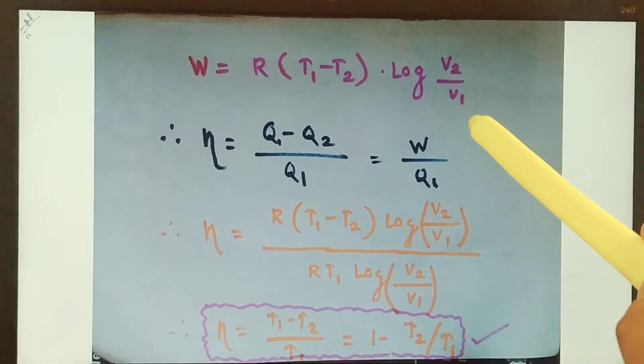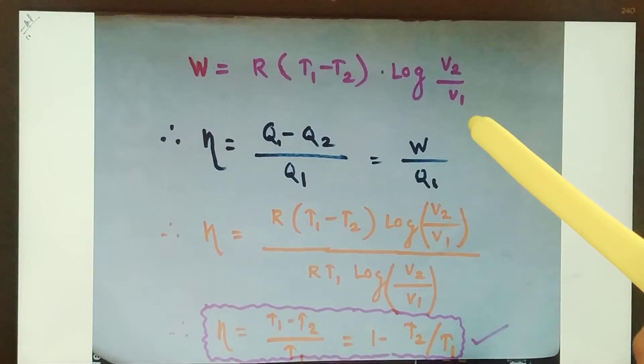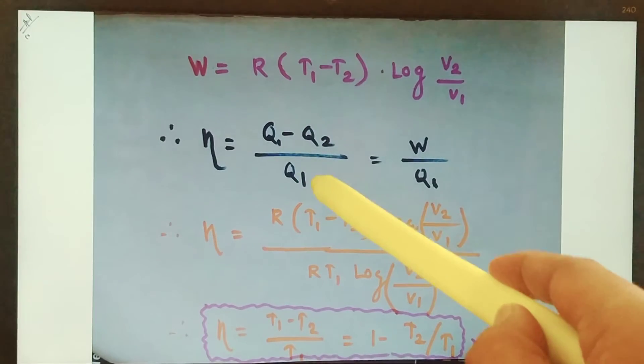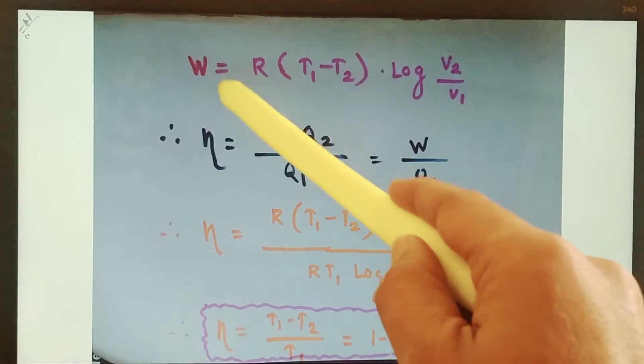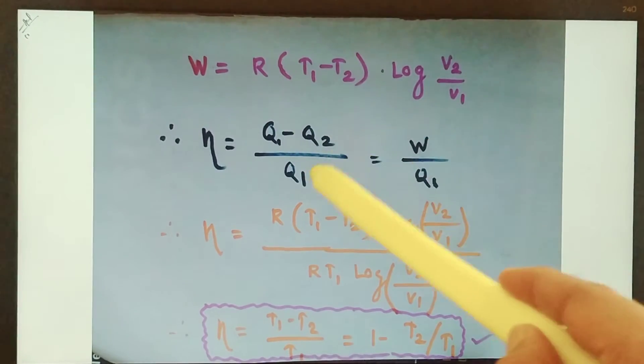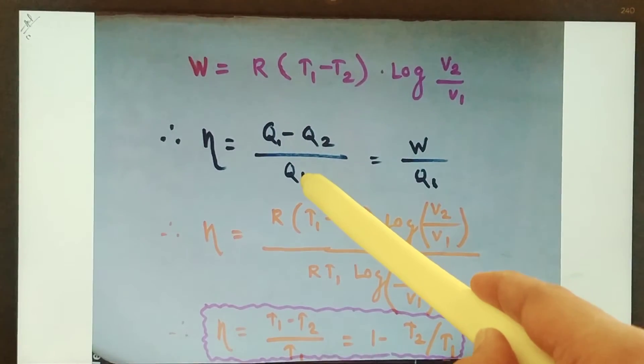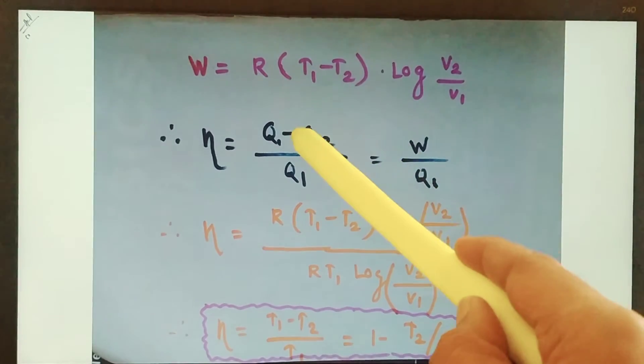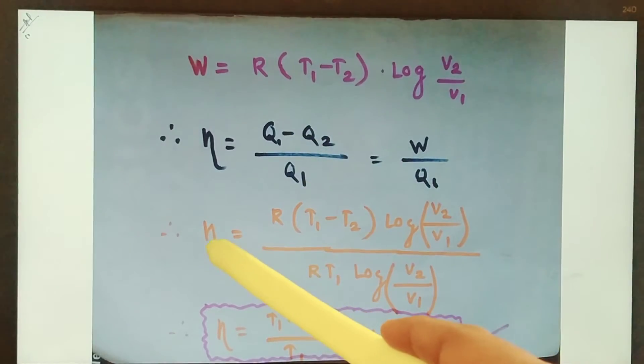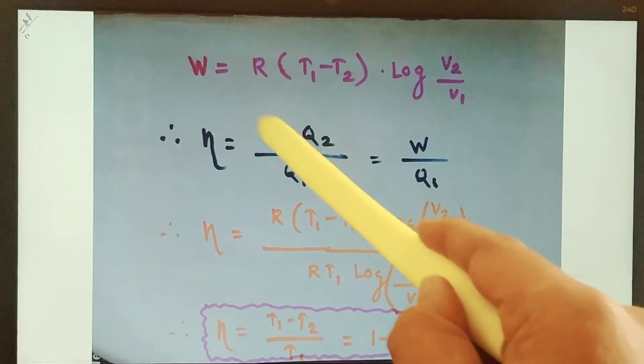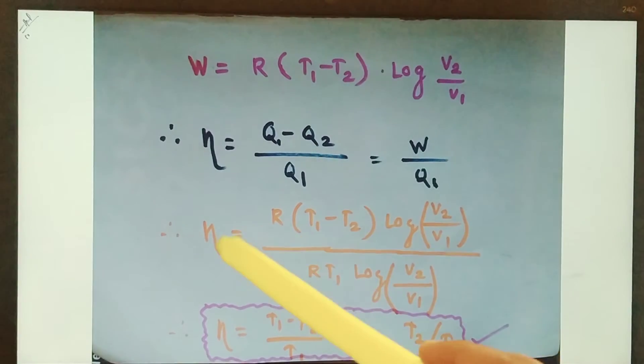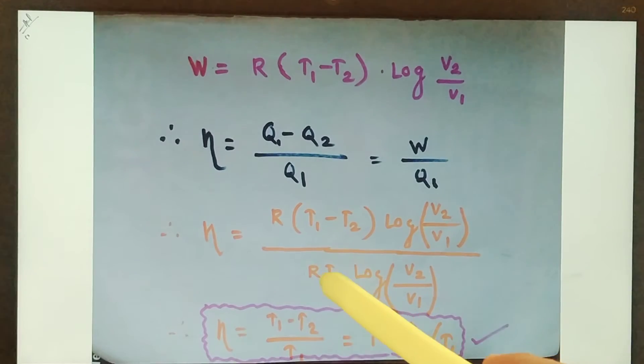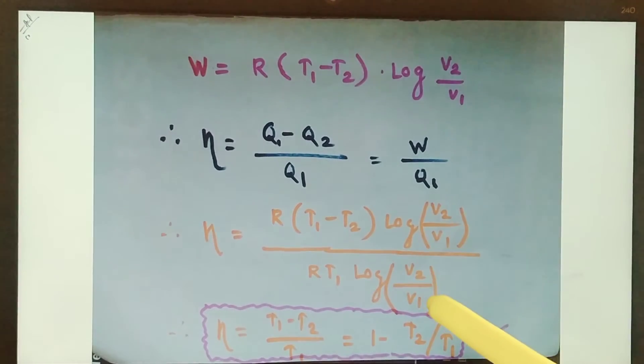Now, it is well known to you that efficiency of any material is nothing but the output upon input. So Q1 minus Q2 is nothing but the amount of work done, that is output, and Q1 is the amount of heat supplied to this system, which is nothing but the input. So output upon input comes out to be W, which is work done. Work done is nothing but the output.